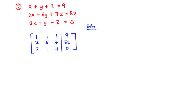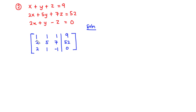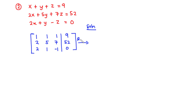The next step is to perform elementary row operations to make all elements in the leading diagonal equal to 1, and elements below the leading diagonal equal to 0. First, let's make these values go to 0. Since we have a 2 in row 2 and a 2 in row 3 in the first column, we perform the operation on row 2: row 2 minus row 3.